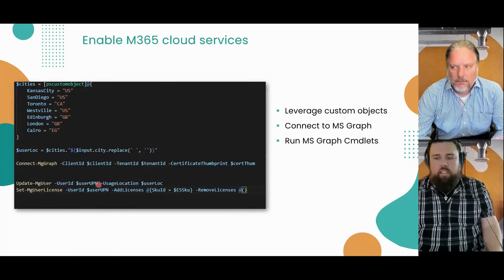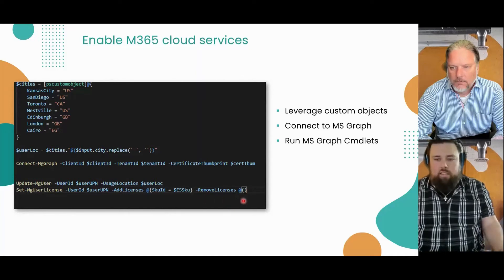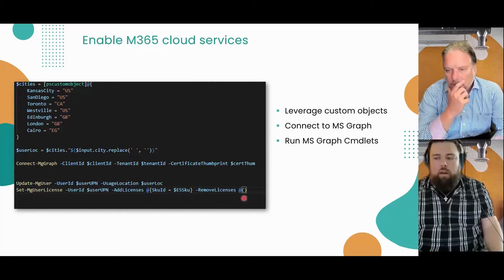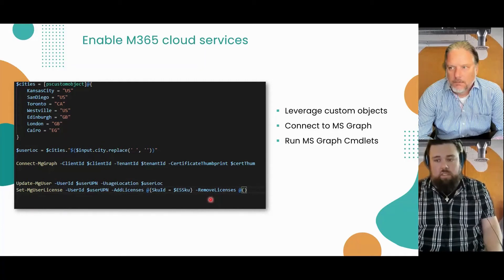The first thing I'm going to do is update the usage location based on the city lookup. Then we set their licensing — I have the SKU stored in a variable and pass it into add-licenses. I pass a blank array to remove-licenses because I don't want to remove any, just add. As you can see, it's pretty simple to add this Teams or online 365 functionality to a user using the M365 SDK.